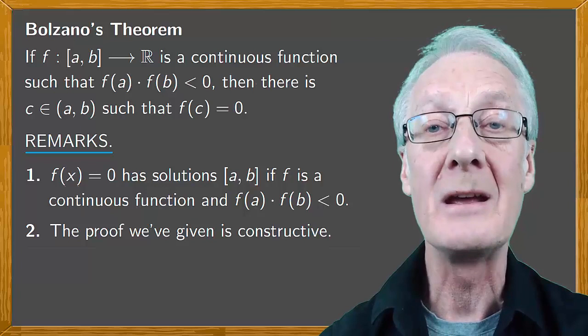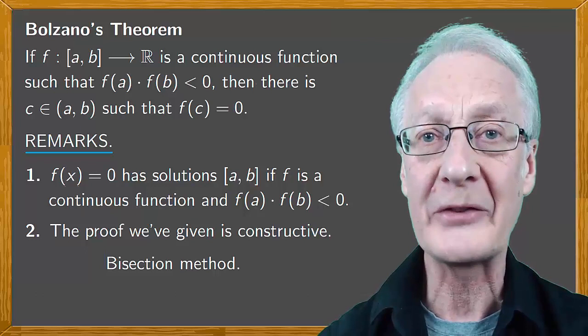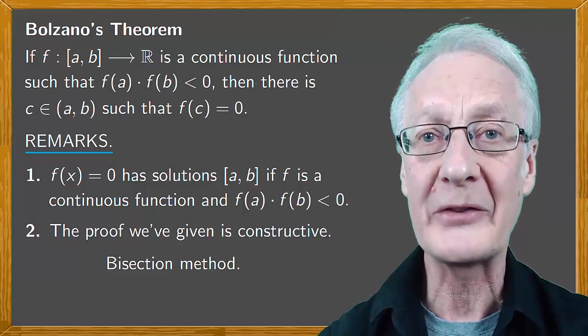There are faster ways to solve equations numerically such as Newton's method, but the good thing about the bisection method is that it's safe in the sense that you can always get as close as you want to the solution.